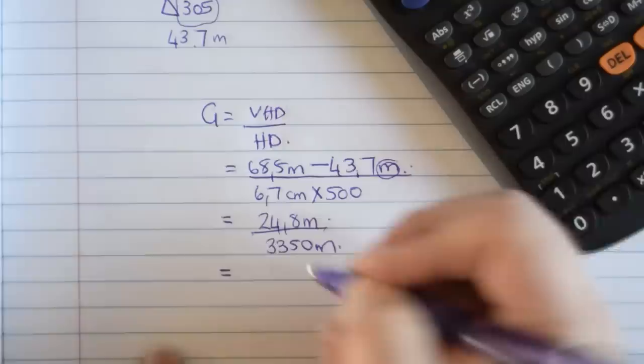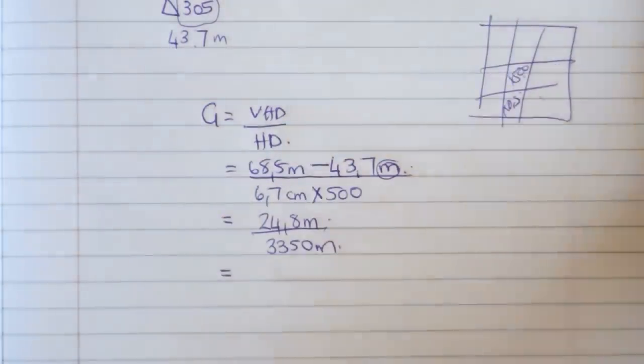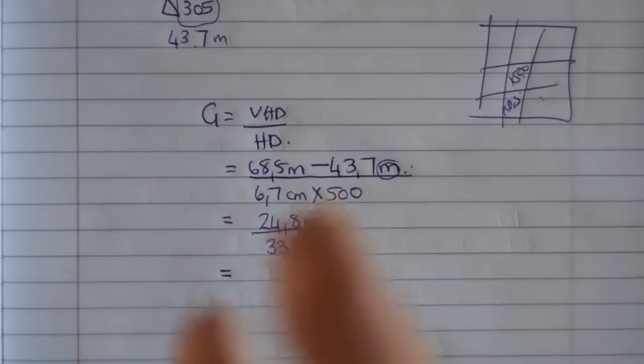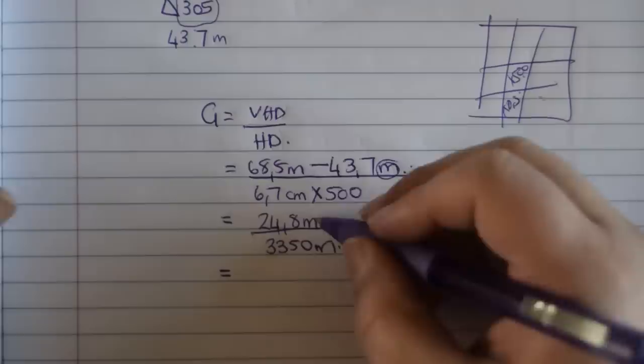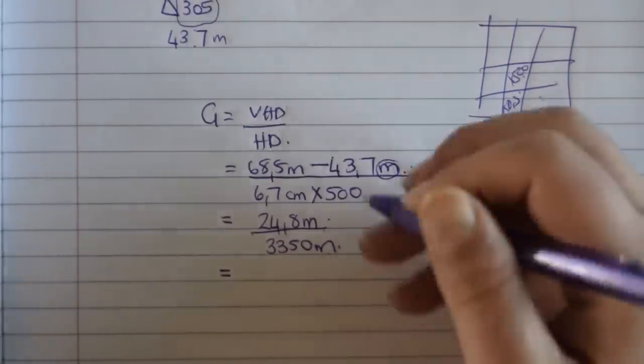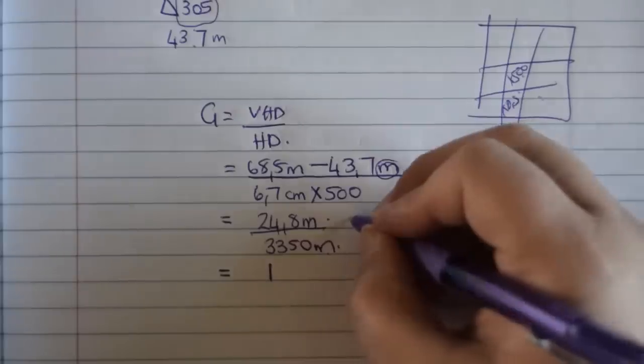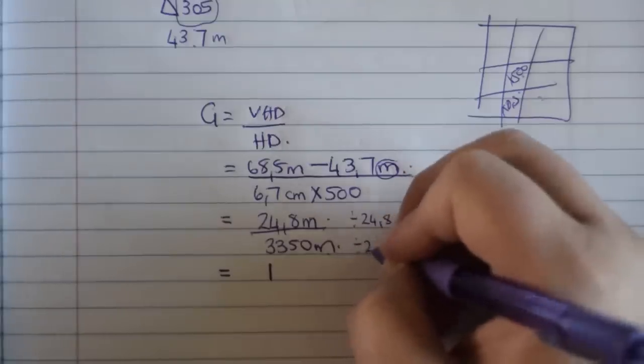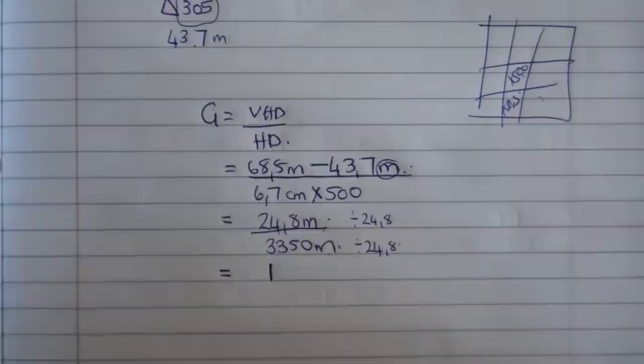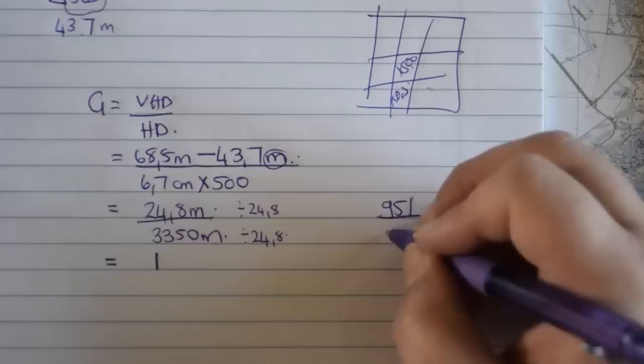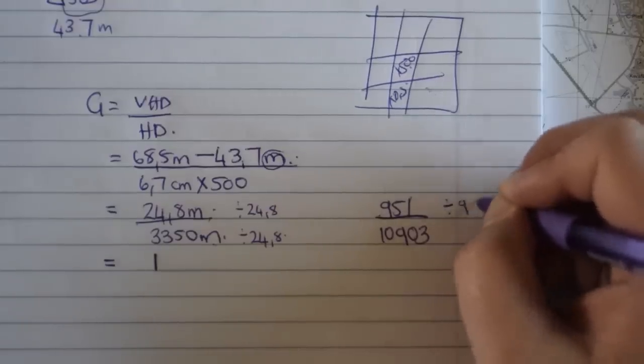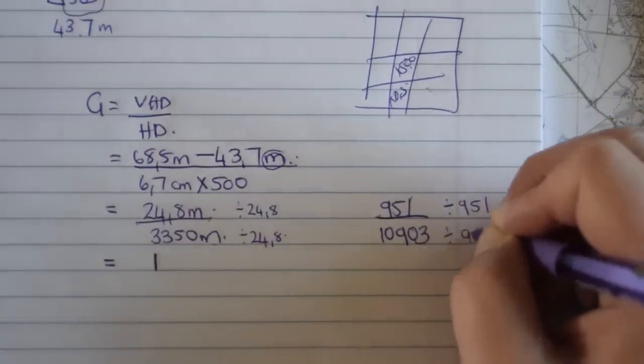Now, if you look at a fraction, a fraction is like siblings. If you give one sweetie to the one kid, you need to give exactly the same one to another one. Otherwise, you're going to have trouble. So, what you do to the one, you must do to the other one. And you always work to the one at the top because you want to get it to a one. So, you will divide by 24.8 at the top. But you need to get the same sweetie for the other one. So, it's going to be divided by 24.8 at the bottom. If you have a number like 951 over 10,903, it will work exactly the same. You will say divided by 951 at the top, and you divide by 951 at the bottom.